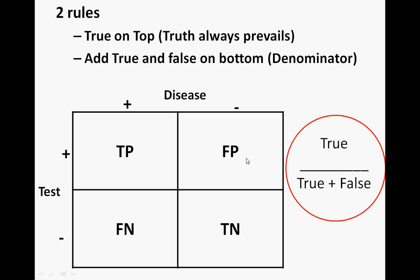There are just two rules to follow. Draw this on a scratch piece of paper: positives in the upper left, negatives on the outer — true positive, false positive, false negative, true negative. When dividing, the true value is always in the numerator. That's the mnemonic: truth always prevails, or simply 'true on top.'